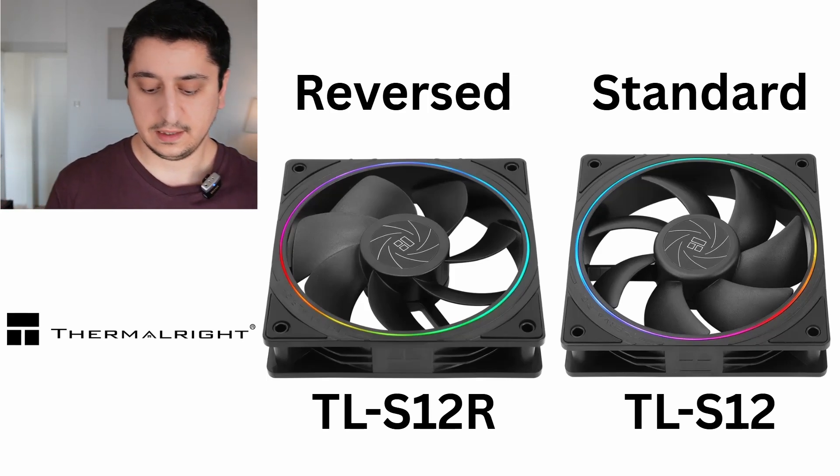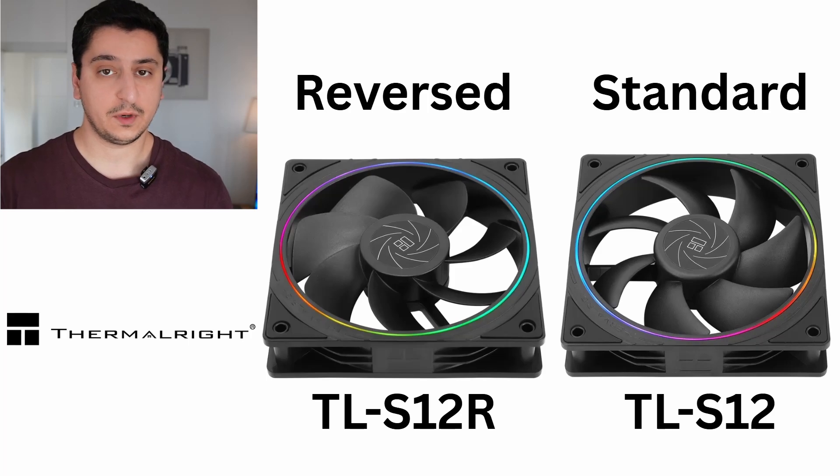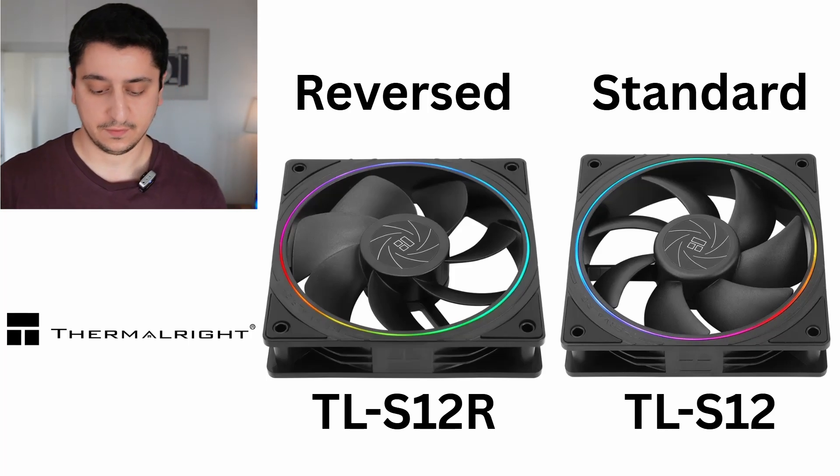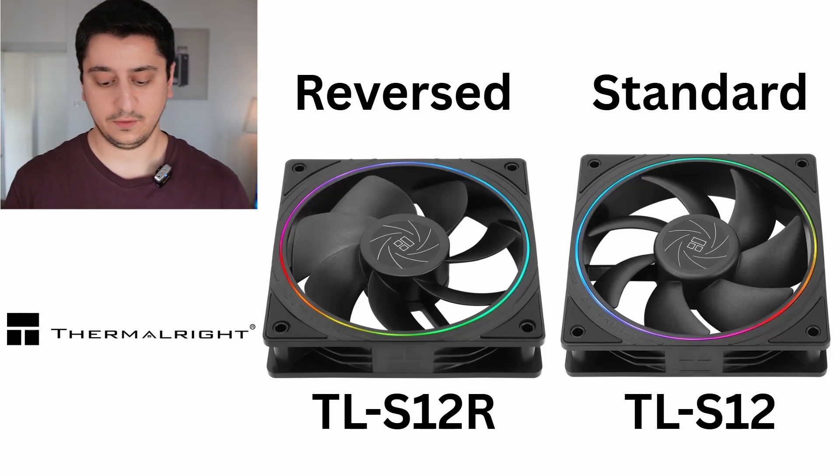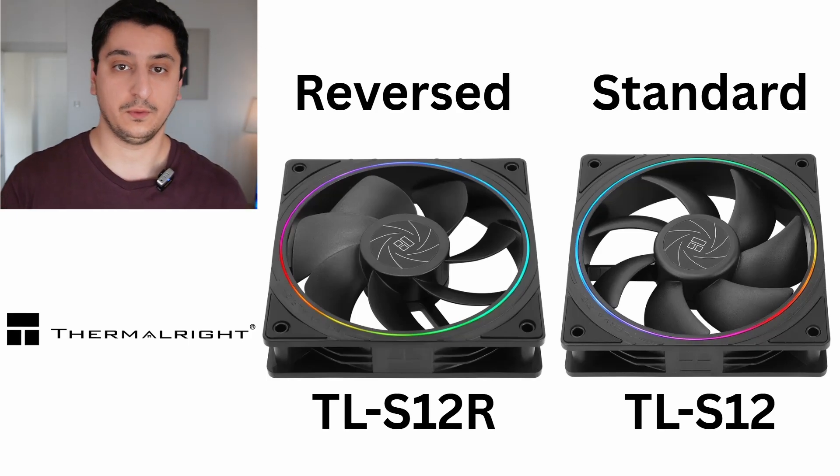These are the TL-S12 fans from Thermalright, which have two variants: a standard and a reversed variant. Now, where do you think the reversed fans will go and where will the standard fans go? This whole discussion only applies to RGB fans. If I put a normal fan, it doesn't really matter which side I put it on. But if I have RGB lighting on the fan itself, I want to show it — if I have to flip the fan and can't see the lights, I kind of miss the whole point.